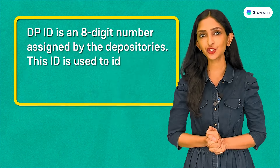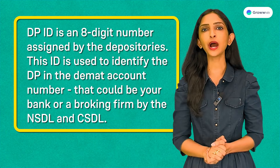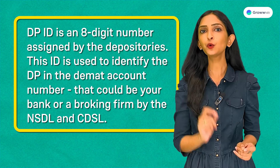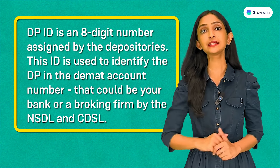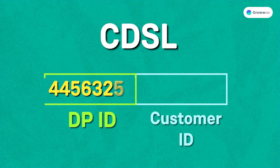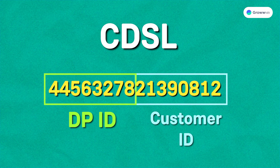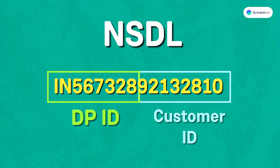The second part is the DP ID — an eight-digit number assigned by depositories to identify the depository participant, which could be your bank or broking firm, within NSDL and CDSL. The DP ID is the first eight digits of your DMAT number, and the customer ID is the last eight digits. Be careful with NSDL, as the first eight digits will also include the letters 'IN'.